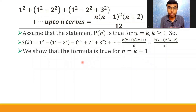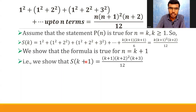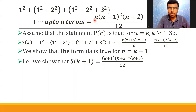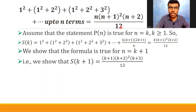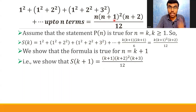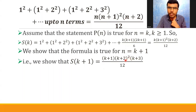Now what I need to do is show that the given statement is true for n = k + 1. That basically means I need to show that S(k+1) equals the target expression. Looking at the RHS of the original question — n(n+1)²(n+2)/12 — if I put n = k+1, I get (k+1)(k+2)²(k+3)/12. That's what I need to prove.